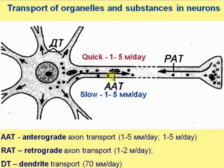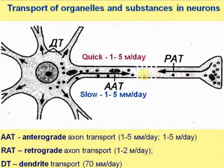There is quick and slow anterograde transport in neurons. There is also retrograde axon transport in the opposite direction — from the periphery to the cell body. By retrograde transport, defective organelles are transported back for autophagy by lysosomes, along with empty vesicles and membranes, and information about the periphery. However, sometimes toxins and viruses can also be transported from the periphery to the central nervous system and affect its neurons.